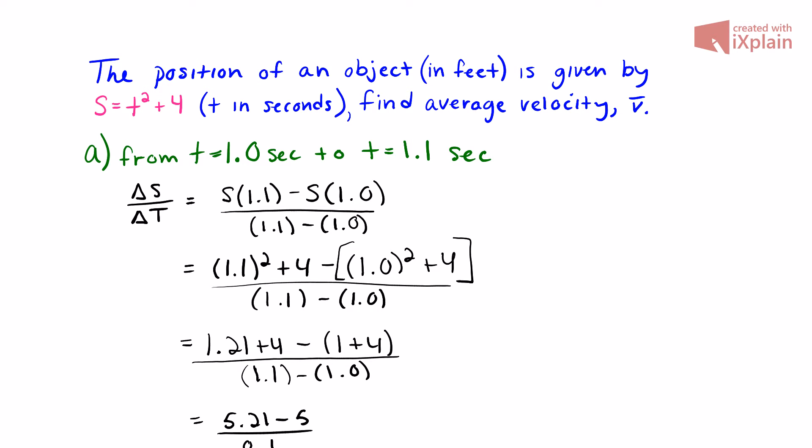All right guys, our problem today is: the position of an object in feet is given by S = t² + 4, where t is in seconds. Find the average velocity.